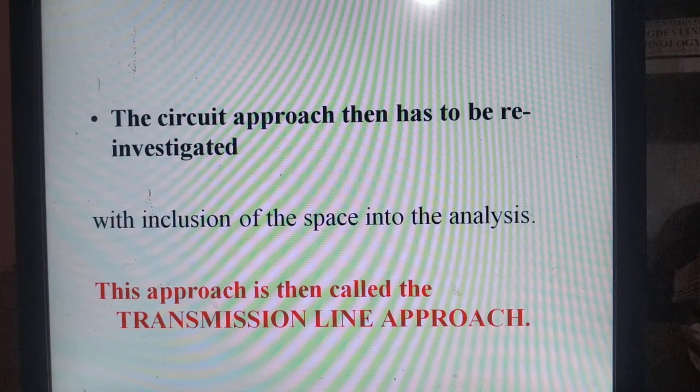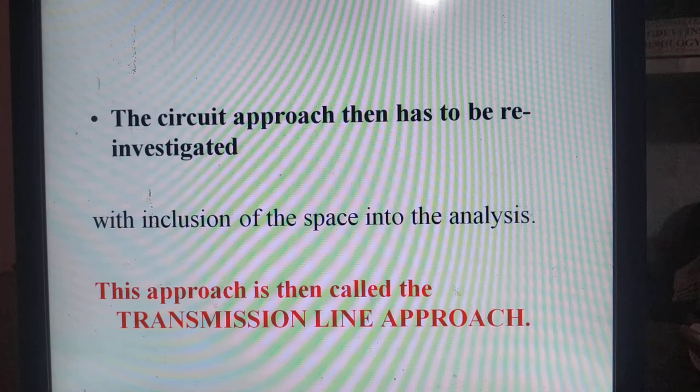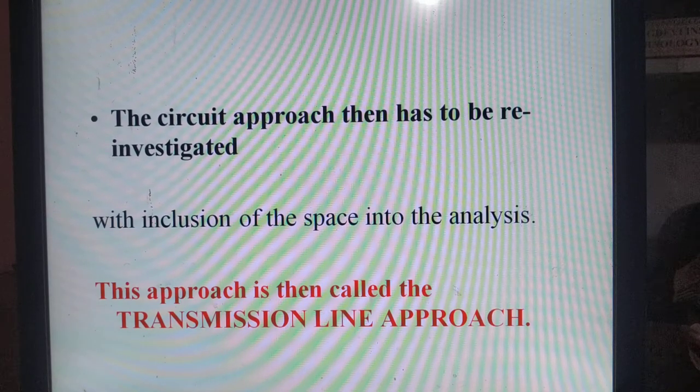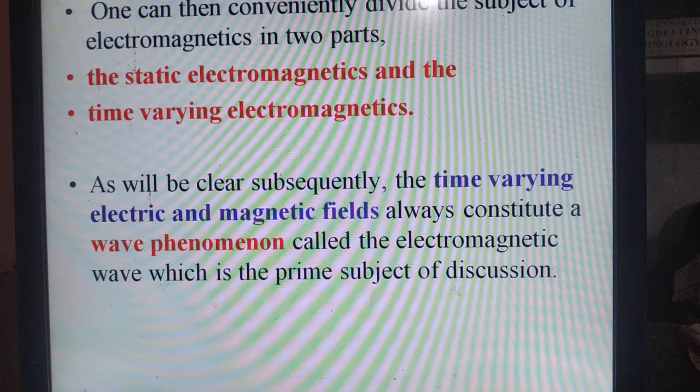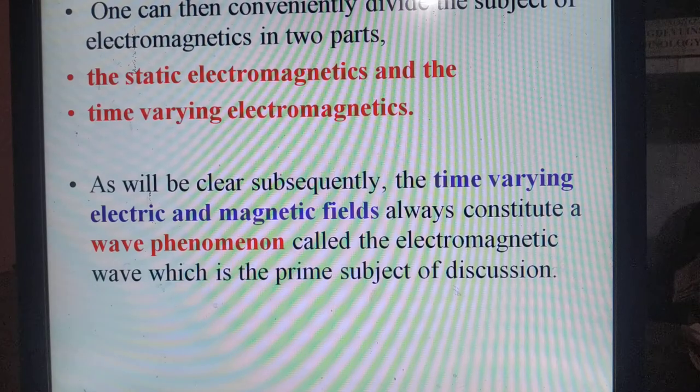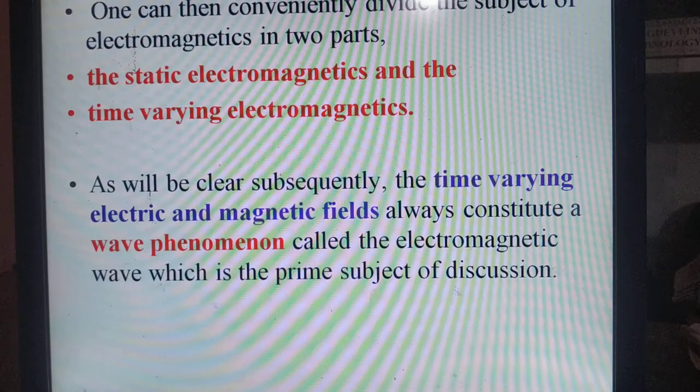Therefore, a new approach came into picture - that approach is transmission line approach. In this transmission line approach, one can divide this entire electromagnetic domain into two parts: one is static electromagnetics and the other one is time-varying electromagnetics.